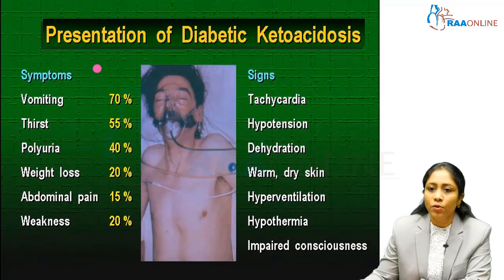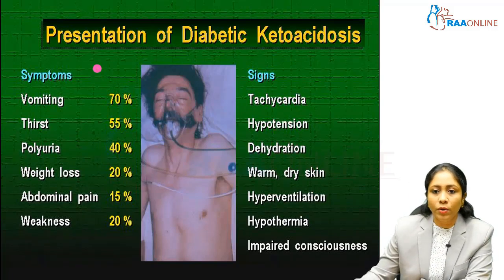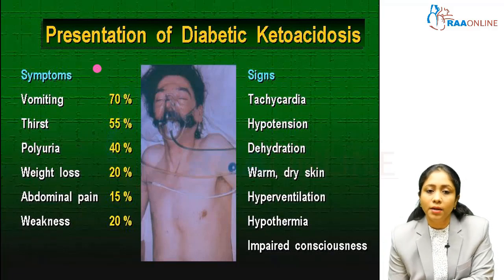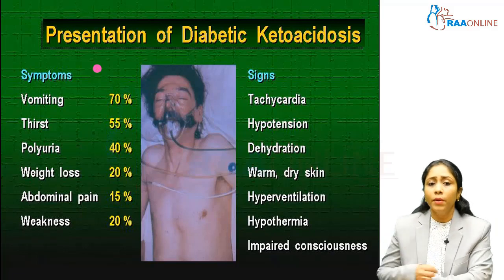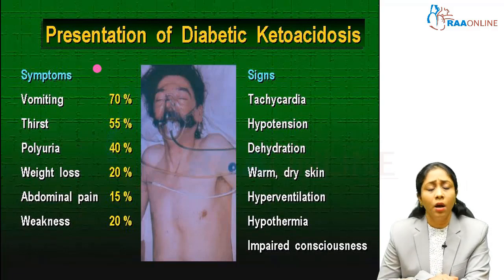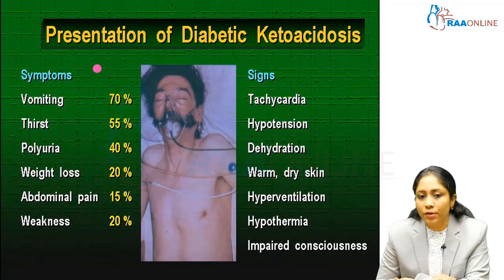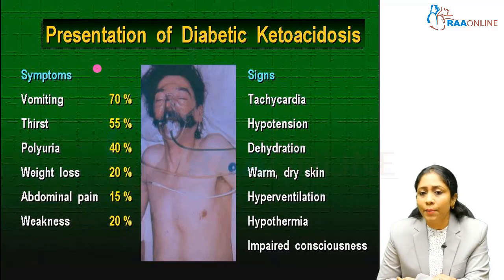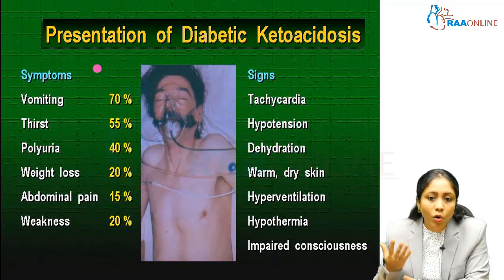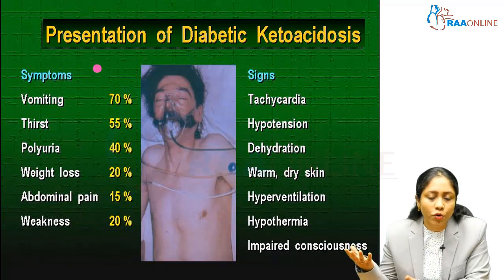The clinical presentation of DKA includes vomiting, thirst, polyuria, weight loss, pain abdomen, and weakness. Pain abdomen is a well-known teaching point — DKA is one of the medical causes for a patient to present to a surgical outpatient department. Always check blood sugars in a diabetic patient or a child presenting with non-specific abdominal pain and vomiting, as it could completely change the clinical picture.